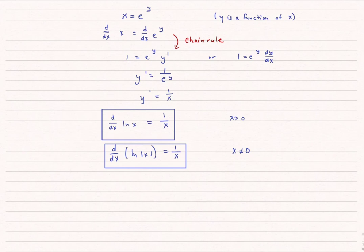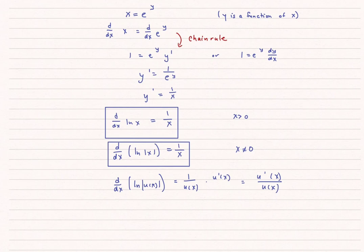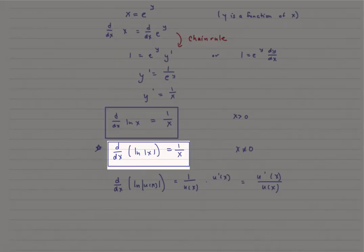If we don't want that constraint, we can use the absolute value of x: the derivative of natural log of the absolute value of x equals 1 over x, with the stipulation that x cannot equal zero. Expanding further, for the derivative of natural log of u(x) with absolute value, by the chain rule this equals 1 over u(x) times u prime of x, which simplifies to u prime of x over u of x.